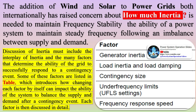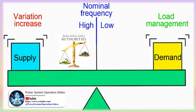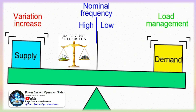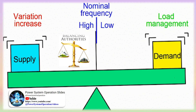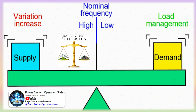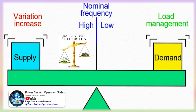All three types — rotor angle stability, voltage stability, and frequency stability — must be met at all times to maintain the security of the network. The addition of wind and solar to power grids has raised concern about how much inertia is needed to maintain frequency stability: the ability of a power system to maintain steady frequency following an imbalance between supply and demand. Discussion of inertia must include the interplay of inertia and the many factors that determine the ability of the grid to successfully respond to a contingency event.